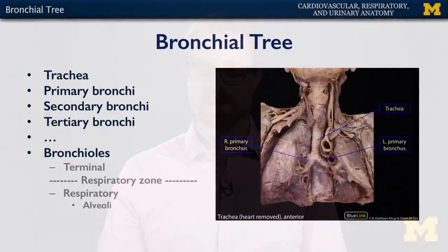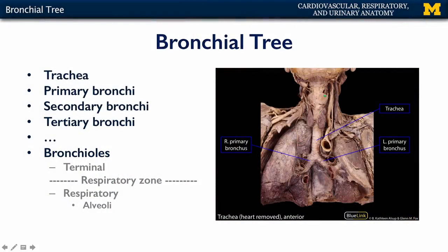Let's talk about the bronchial tree. The bronchial tree is the conductive pathway that leads from the larynx down to the alveoli of the lungs. It starts with the trachea — here's the larynx with the thyroid and cricoid cartilage, and here's the thyroid gland and its lobes. The trachea descends through the mediastinum after leaving the neck and bifurcates into primary bronchi. At this bifurcation point there's a cartilaginous keel called the carina that is richly innervated.